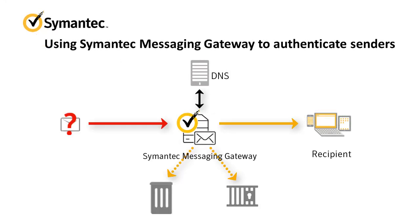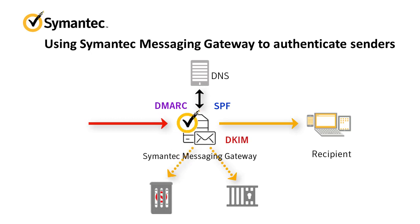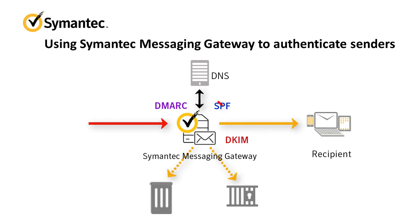Semantic Messaging Gateway provides multiple sender authentication options to detect these forgeries. When a message fails authentication, content filtering policies can delete it automatically, send it to a quarantine folder for examination, or even deliver it to recipients if the message fails one sender authentication test but passes another.